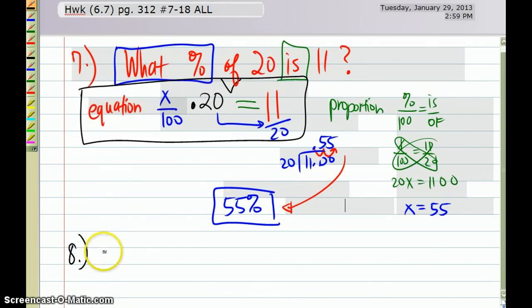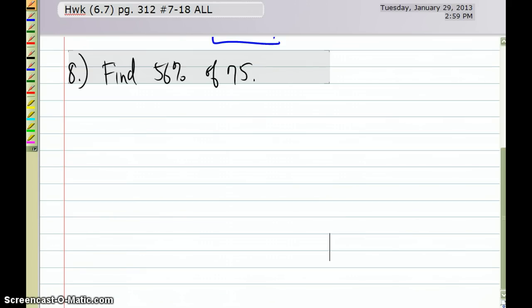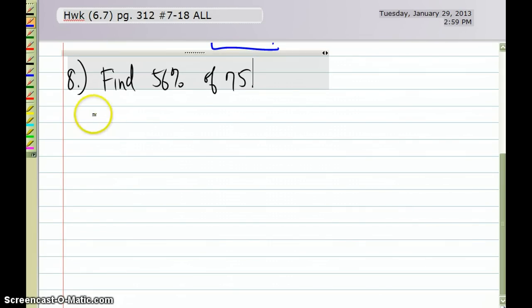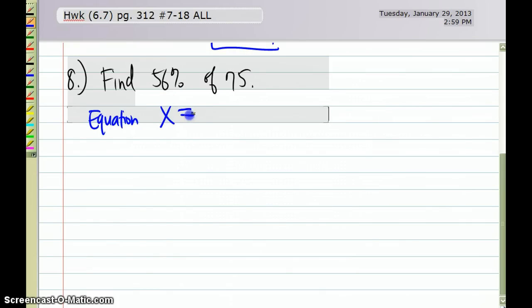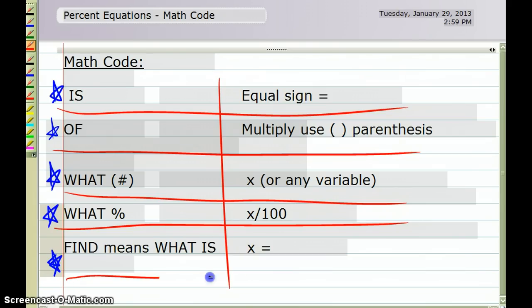I'm going to do number 8. I'm going to find 56% of 75. So I'm going to take each word and write an equation. My equation starts with the word 'find,' and in my math code, find means 'what is,' so that's x equals. So back over here, I'm going to write x equals 56%, meaning I'm going to change the percent to a decimal. I think I need to go back here, and I think I forgot to add that.